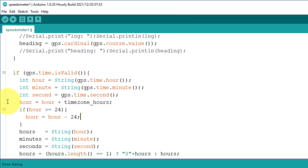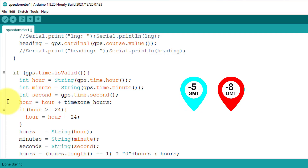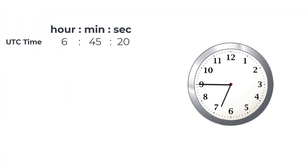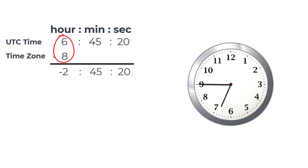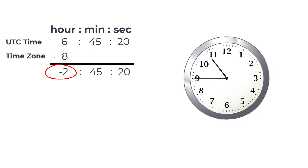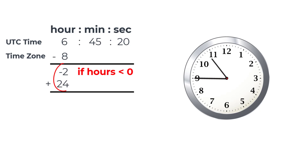But this will never work with a negative time zone like GMT minus 8 or GMT minus 5, so we will have to write some more code. For example, here is the UTC time, and if we add minus 8 hours, we get 6 minus 8 which is minus 2. The hours are invalid again — hours must be greater than 0. So if the hours are less than 0, we add 24 to them. Minus 2 plus 24 is 22, and now the time becomes valid.